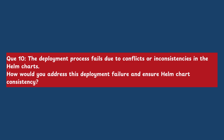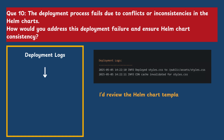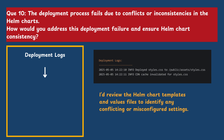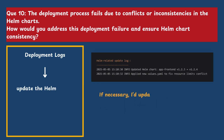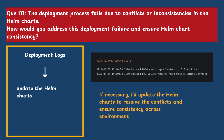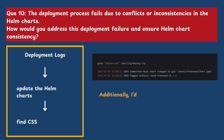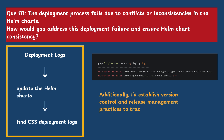Question 10: The deployment process fails due to conflicts or inconsistencies in the Helm chart. How would you address the deployment failure and ensure Helm chart consistency? I would review the Helm chart templates and values files to identify any conflicting or misconfigured settings. If necessary, I would update the Helm chart to resolve the conflicts and ensure consistency across environments. Additionally, I would establish version control and release management practices to track changes to Helm charts and prevent future inconsistencies.